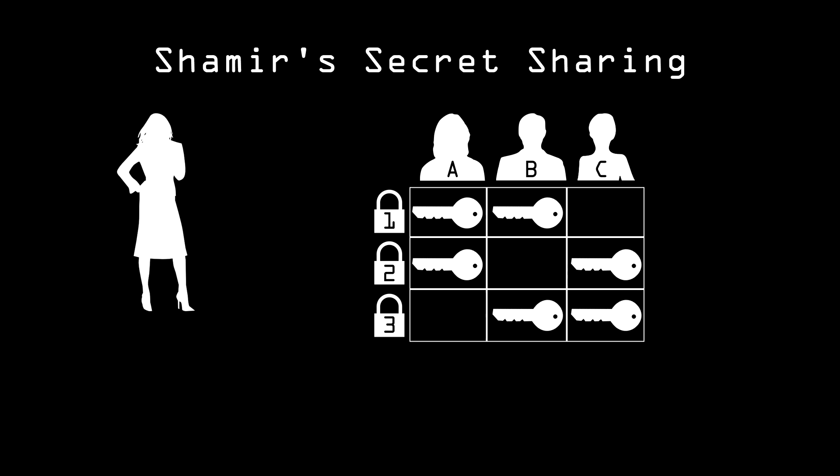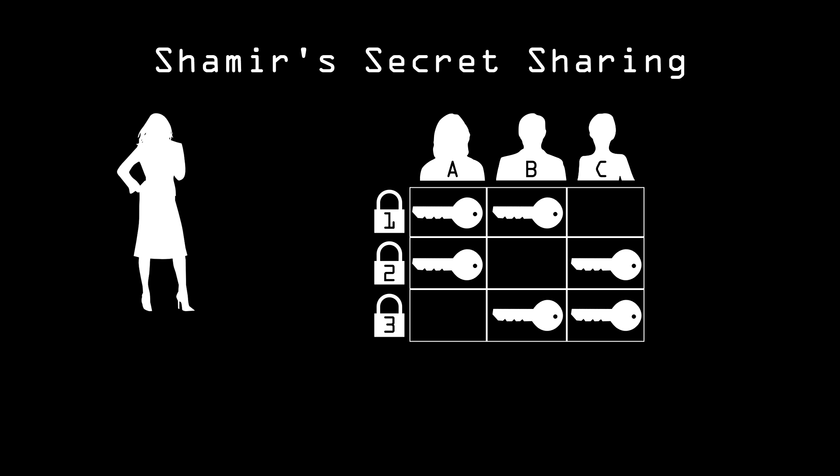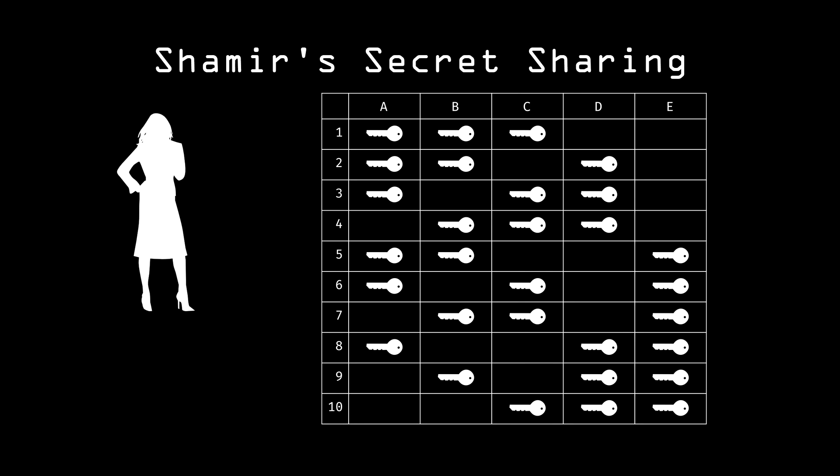This is called splitting. This concept works for any number of tellers and any size group of minimal trust. Let's say our bank manager has five tellers, and she's worried about any two conspiring, so she wants any three of the five tellers to be able to open the vault. Now she needs ten locks and can distribute the keys like so. No two tellers can open all ten of the locks, but any three can.